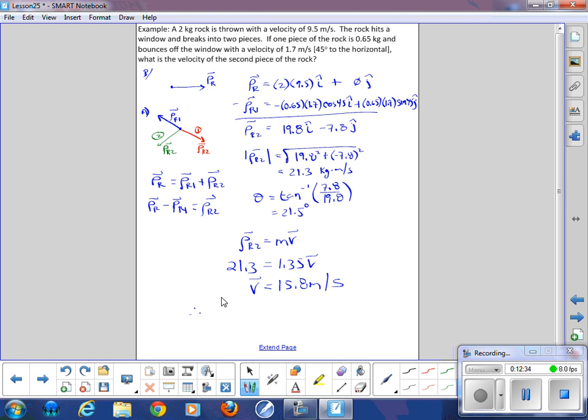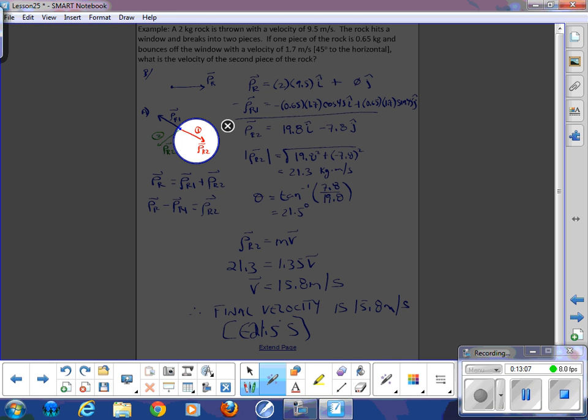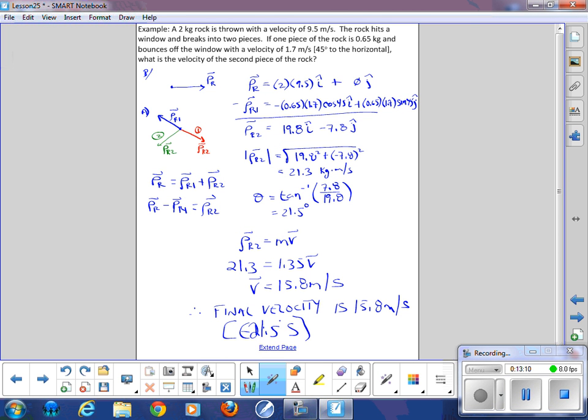So therefore, final velocity is 15.8 meters per second. And the direction would be, because that component up here is positive, it's going to be east. Then it's negative, so it'd be south. So east, 21.5 degrees south. So it turns out it was actually what we anticipated was the red vector. That's the resulting direction. And yeah, the velocity started at 9.5 and that chunk that broke off actually sped up. And that's because of the conditions of that second rock. It slowed down so much that that momentum was passed to the second piece of rock. And because of the mass difference, it increased its velocity.